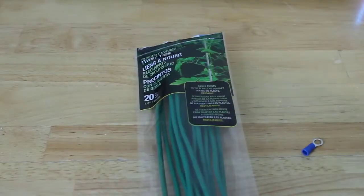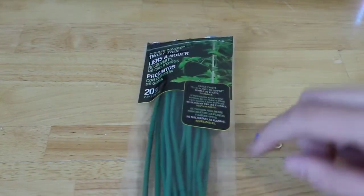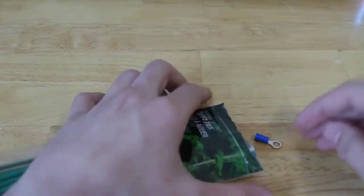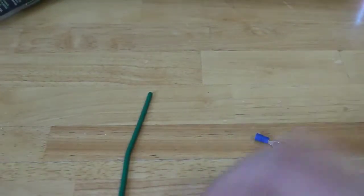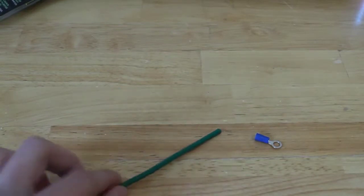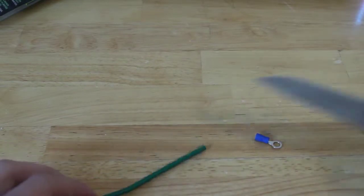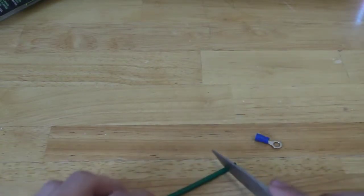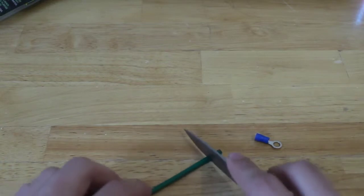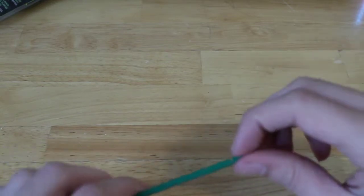So the first thing we're going to do is attach the crimp connections to the end of the twist ties so I'm just going to take one out. Now the first thing we have to do to modify this so it fits on is cut about half an inch of the rubber off the end of this and I'm just going to be using a knife. So we're just going to cut the rubber just like that and slide the piece of rubber off.